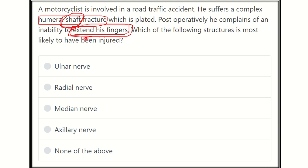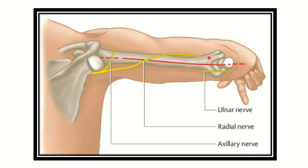Here we can see the humerus and the different nerves present at different parts of it. A fracture of a specific region will cause damage to the corresponding nerve. First, the axillary nerve is located at the surgical neck of the humerus, so when the surgical neck is fractured, the axillary nerve will be damaged.